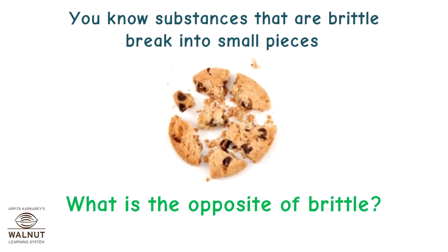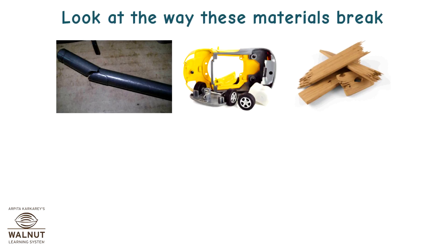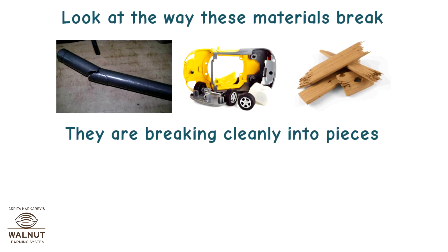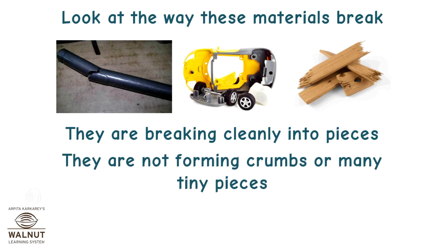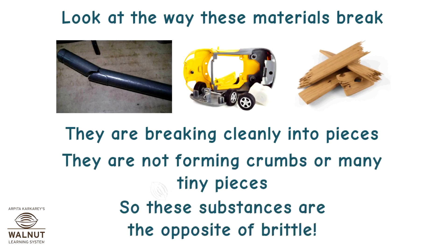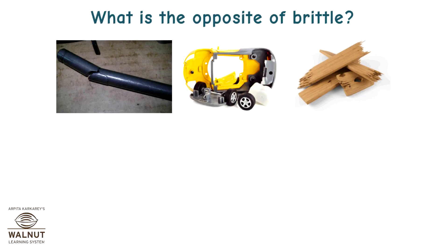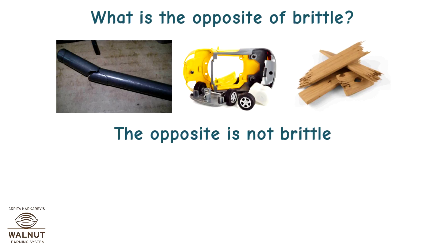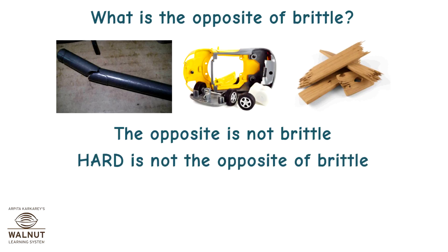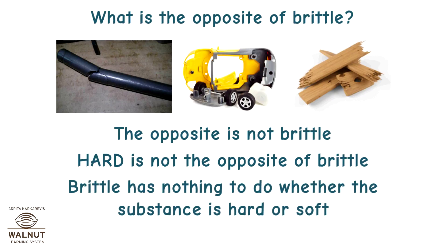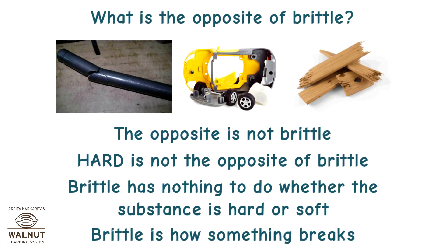What is the opposite of brittle? Look at the way these materials break — they are breaking cleanly into pieces. They are not forming crumbs or many tiny pieces. So these substances are the opposite of brittle. Hard is not the opposite of brittle. Brittle has nothing to do with whether the substance is hard or soft. Brittle is how something breaks.